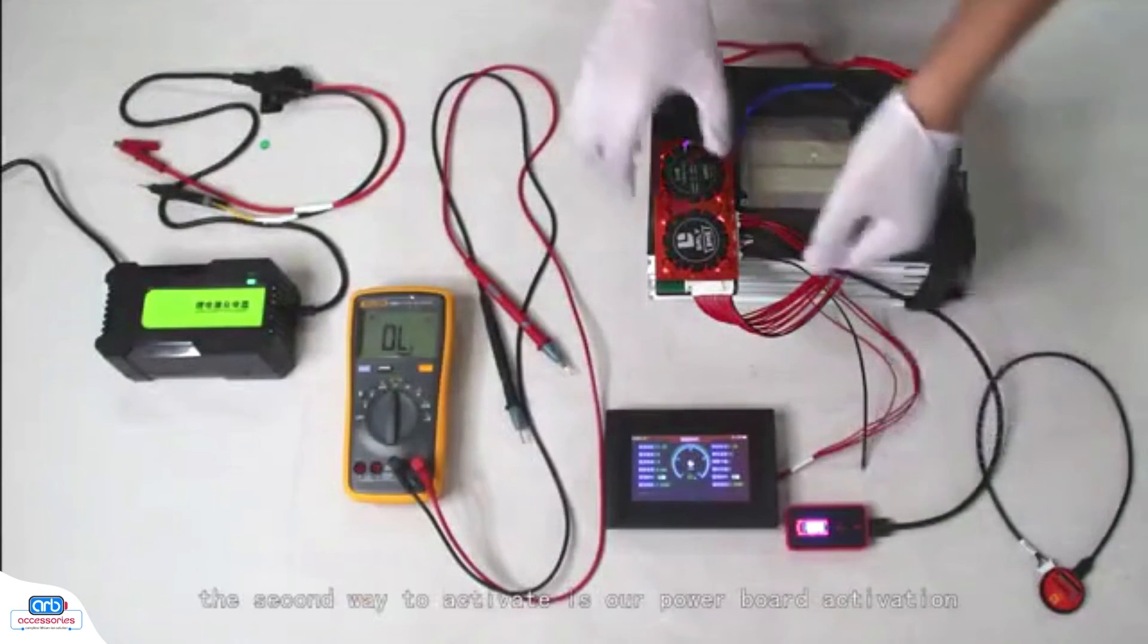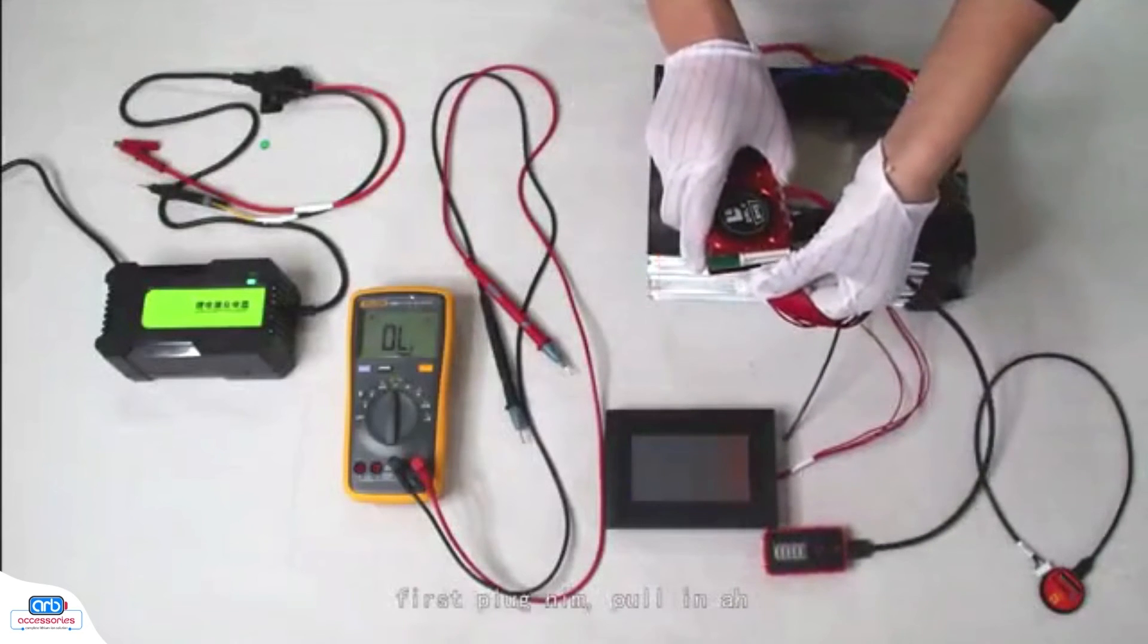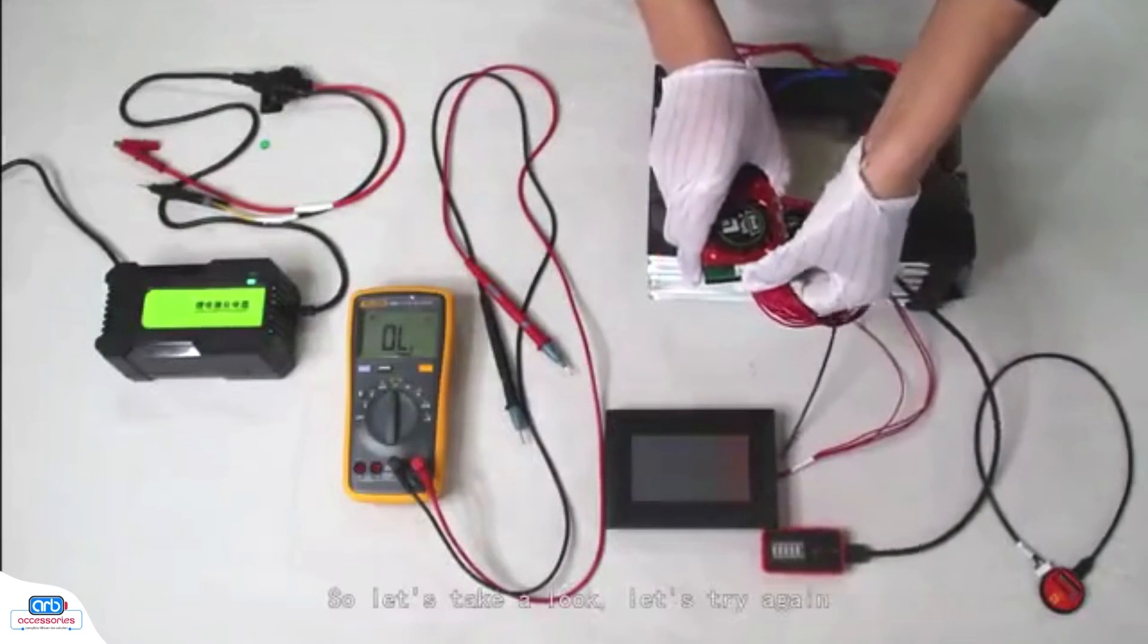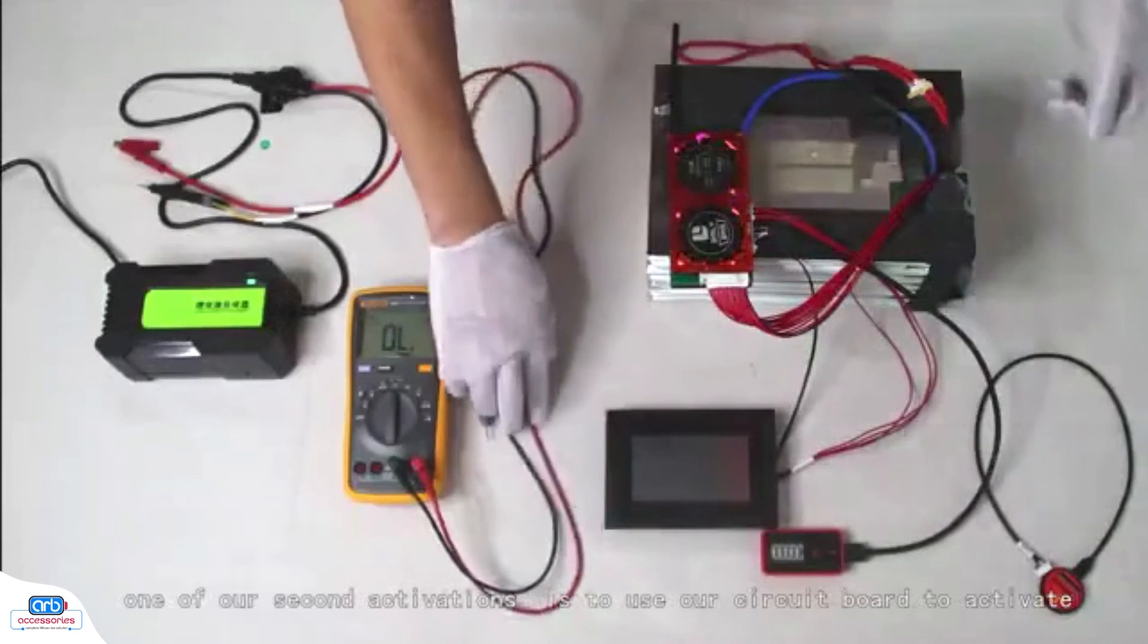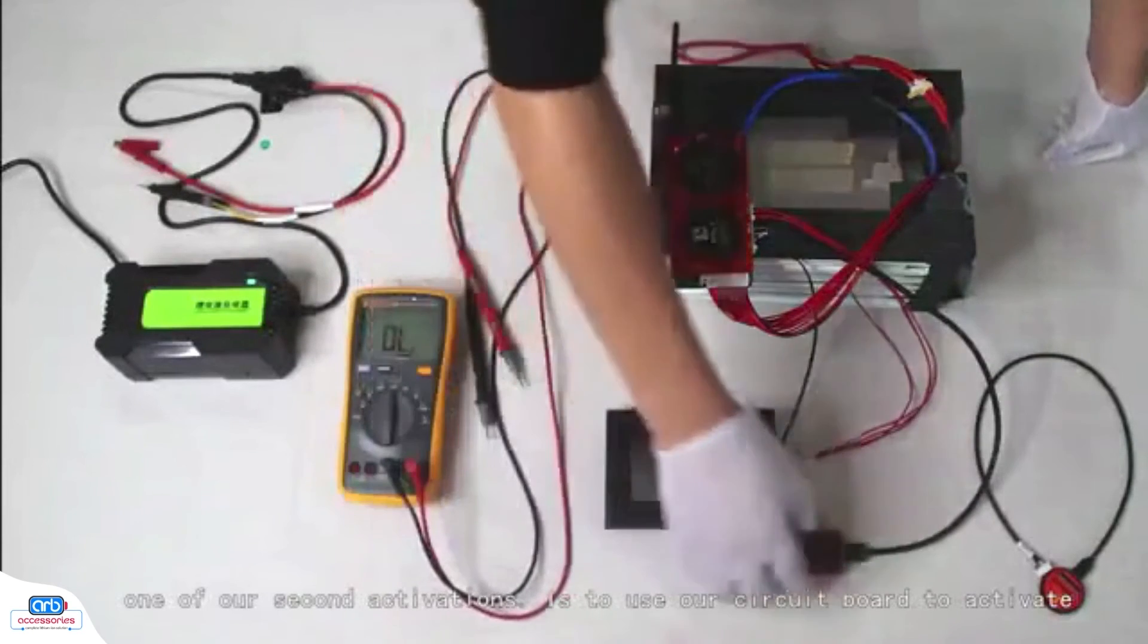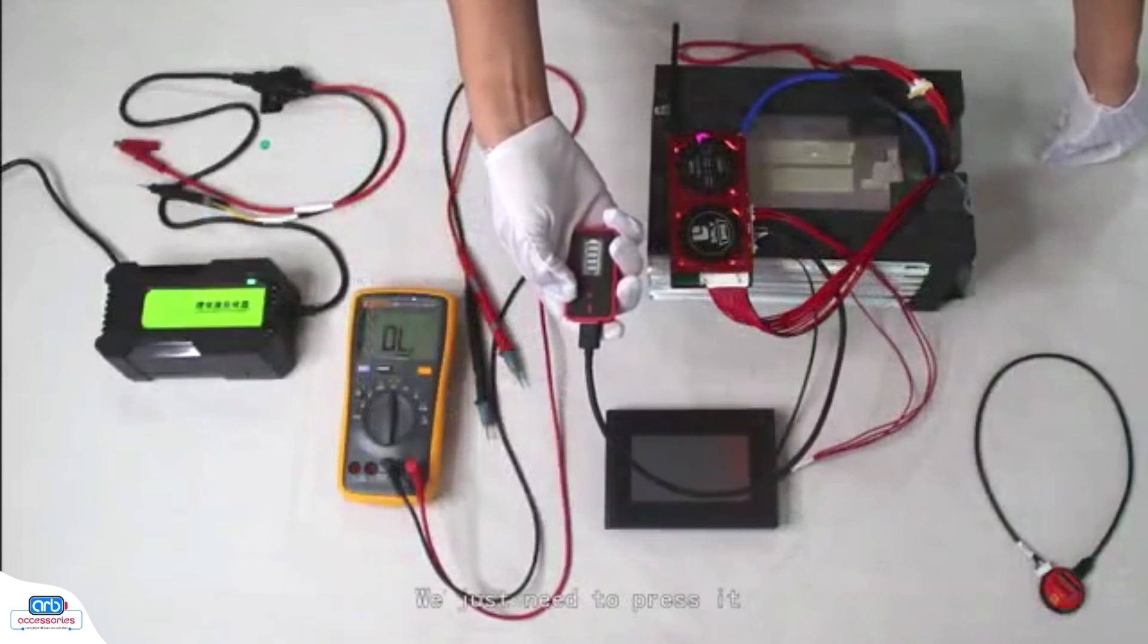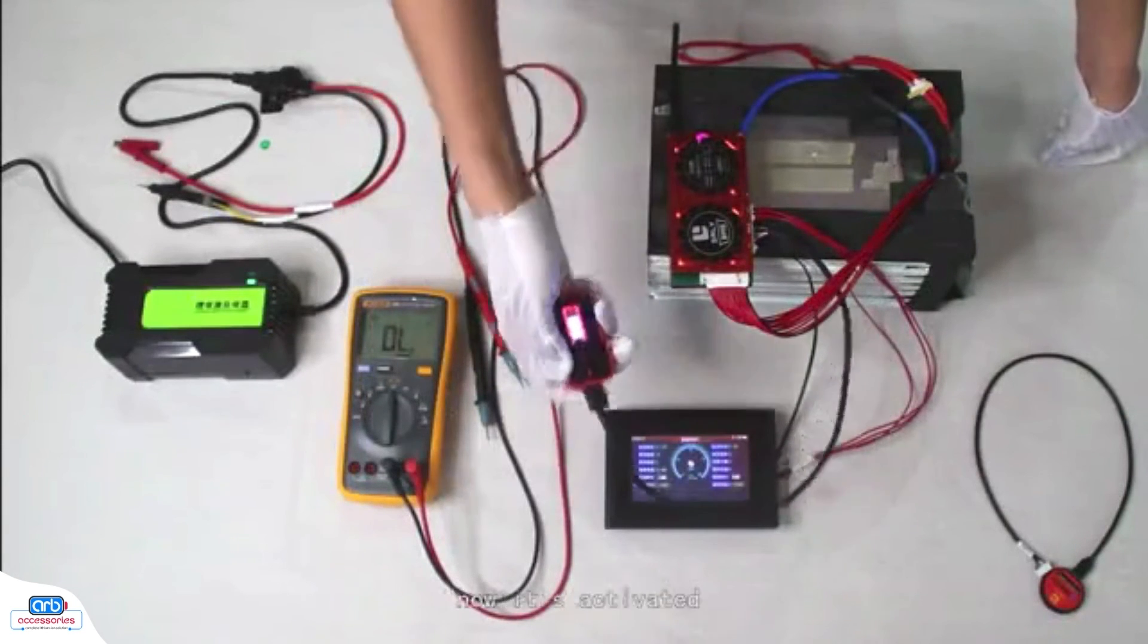Let's take a look. One of our second activations is to use our circuit board to activate. We have an activation button on the circuit board. We just need to press it. You can see, now it's activated.